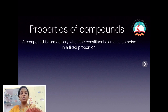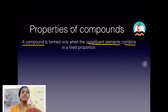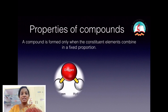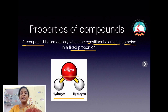The first property of a compound is that it is formed only when the constituent elements combine in a fixed proportion. The elements which make up the compound are called constituent elements. For example, two atoms of hydrogen combine with one atom of oxygen.